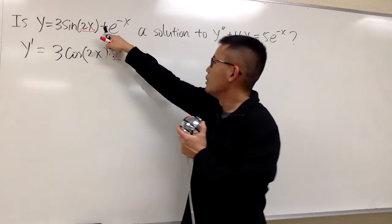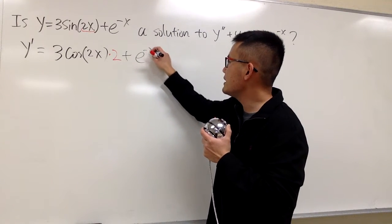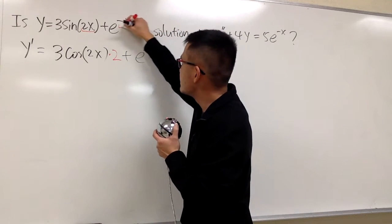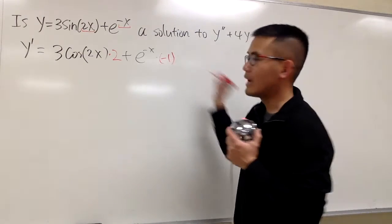And then we continue. Let me put down a plus first, and the derivative of e to the negative x is just e to the negative x. And once again, the chain rule says we have to multiply by the derivative of that, which is negative 1. And this is what we have.